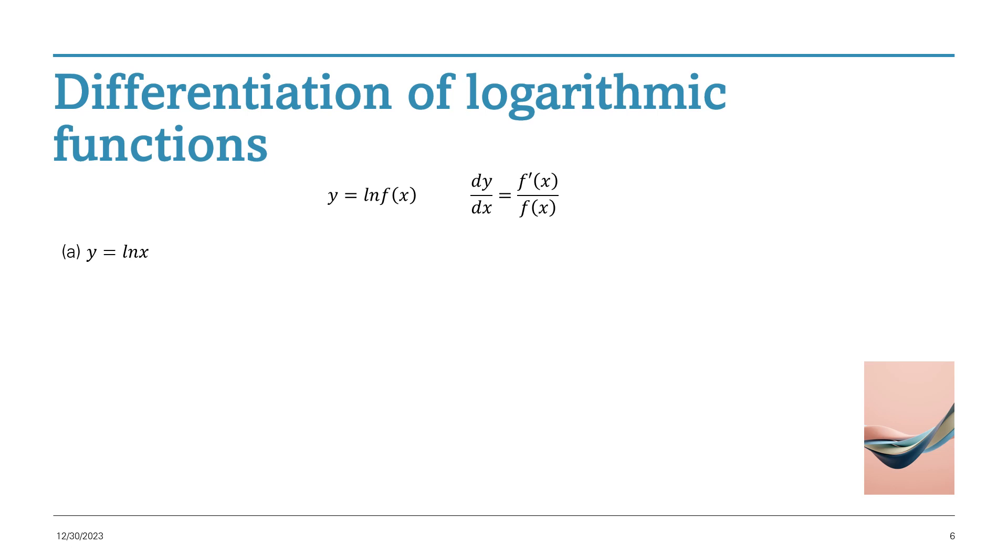Go for the first one, ln of x. So notice that the function part, in this case, is the x. So remember, you put the function, or the x on the bottom, and you put its derivative on the top. So you put the function, which is the x part, on the bottom, and the derivative of x is 1, goes on the top.